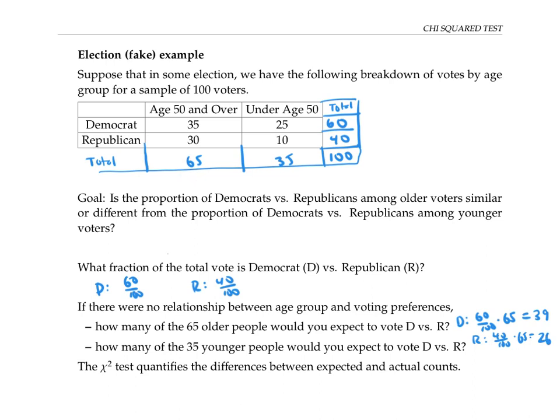Now let's find the number of expected Democrat and Republican voters among the 35 younger people. By the same reasoning, if there's nothing going on with age and voting preference, then we'd expect 60% or 60 out of 100 of these 35 voters to vote Democrat. So that's 21 voters. And we'd expect 40 out of 100 times those 35 voters, which is 14 voters to vote Republican.